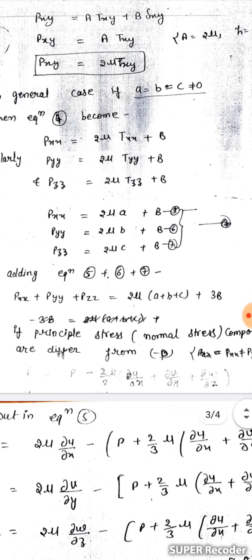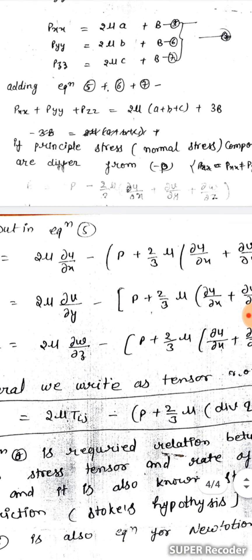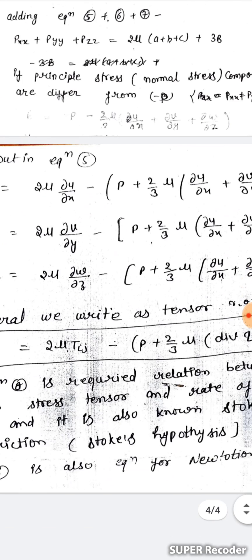Adding equations 5, 6, and 7 gives Pxx + Pyy + Pzz = 2*mu*(a + b + c) + 3B. By the principle that normal stress components differ from minus P, we have Pxx + Pyy + Pzz = -P. Therefore B = -P - (2/3)*mu*(delta u/delta x + delta v/delta y + delta w/delta z). Here Pxx, Pyy, and Pzz are the normal stress components.